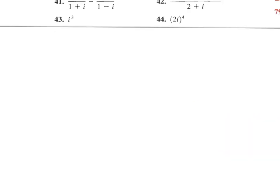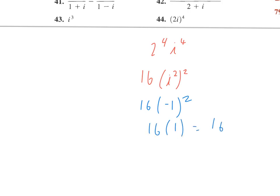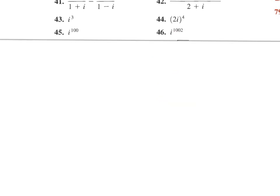Number 44: the fourth power is outside so I'll send it in — 2 to the fourth power is 16, and i to the fourth is i squared squared, or i squared times i squared. I always try to turn it into something involving i squared since that's negative one, and negative one squared is positive one. So this just comes out to 16.